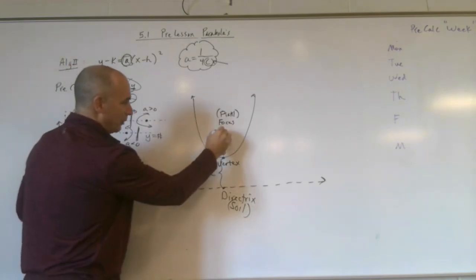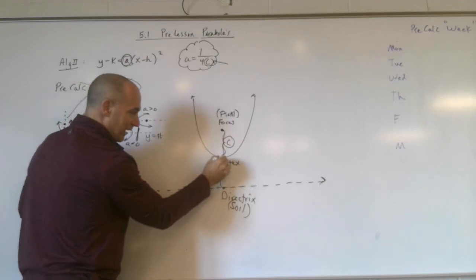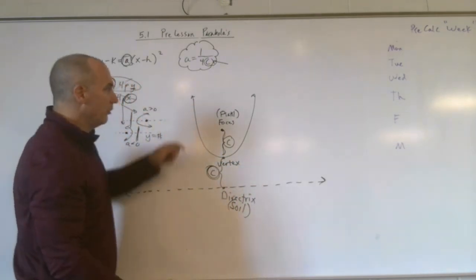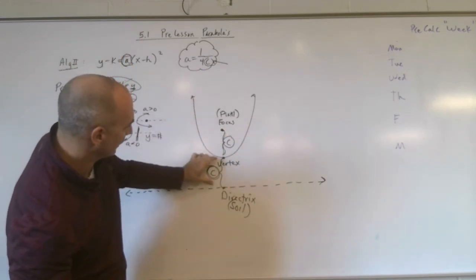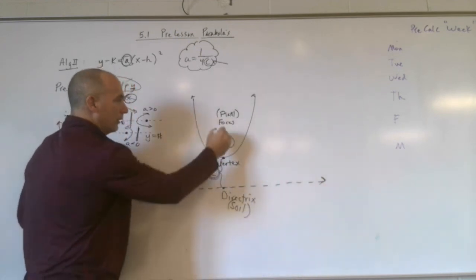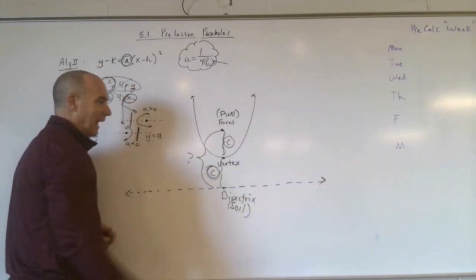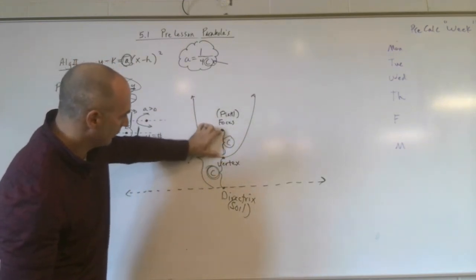And remember, the distance from the focus to the vertex is always c, but the distance from the vertex to the directrix is always c. So in order to figure out what a is, we have to know what this distance is, we have to know what this distance is, or we need to know what this whole distance is, and then just cut it in half. And that would allow us to know what either this or this is.